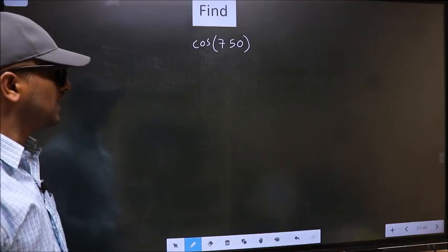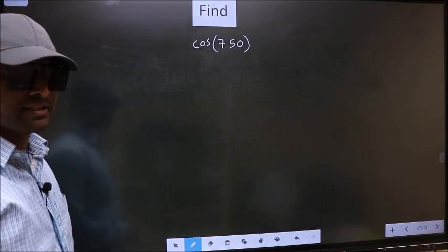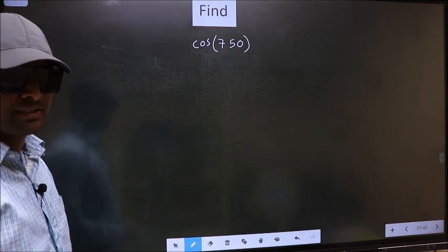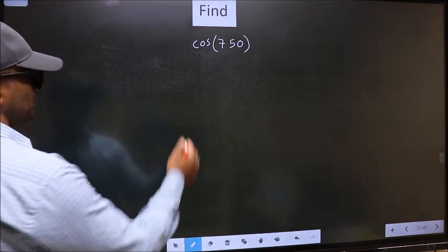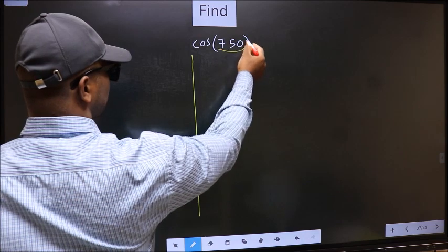Find cos 750. To find this, we should follow this method. See, here we have 750.